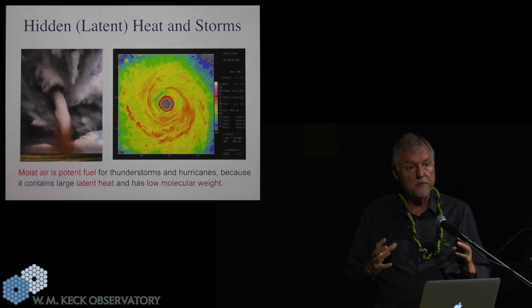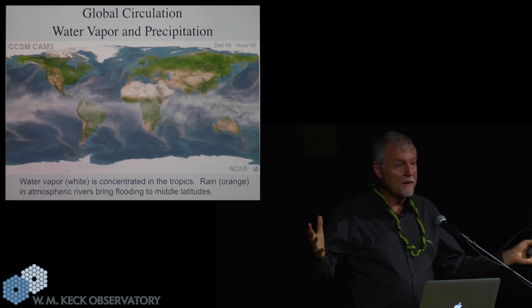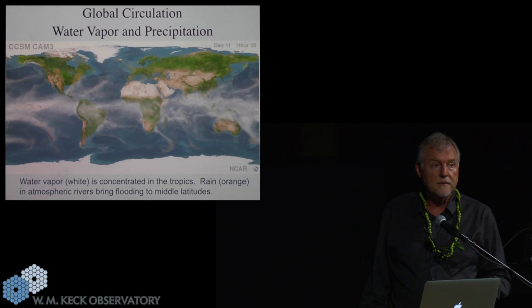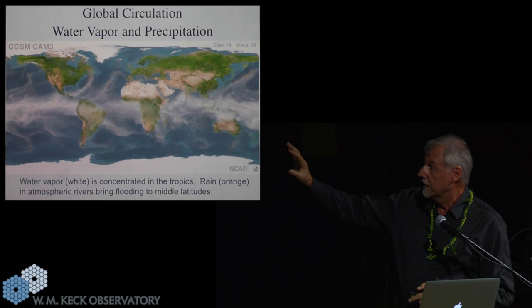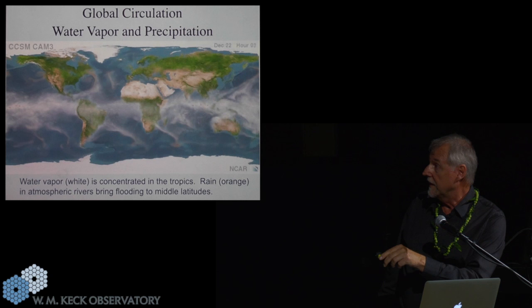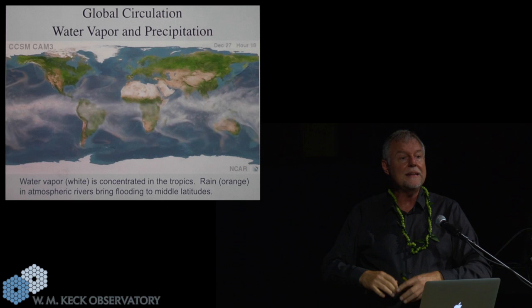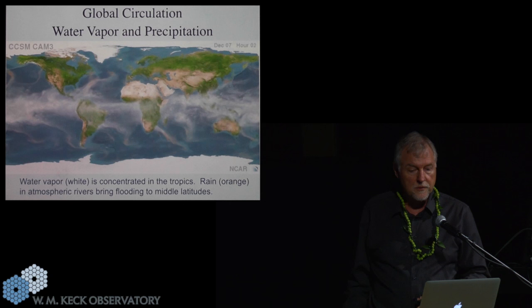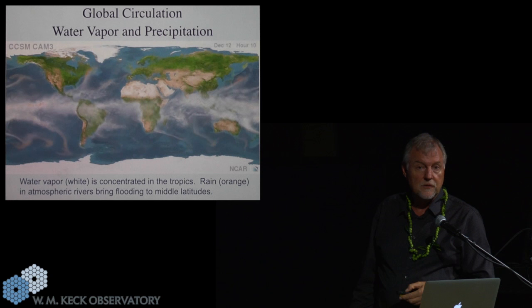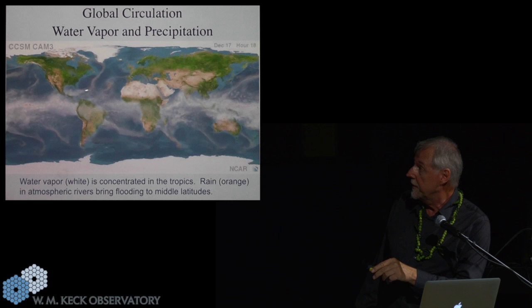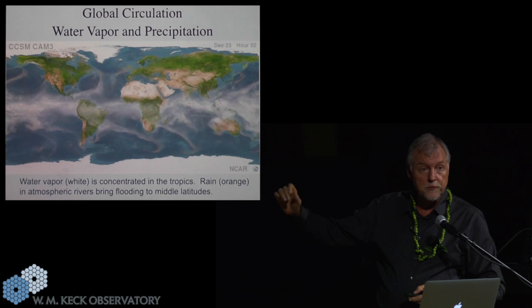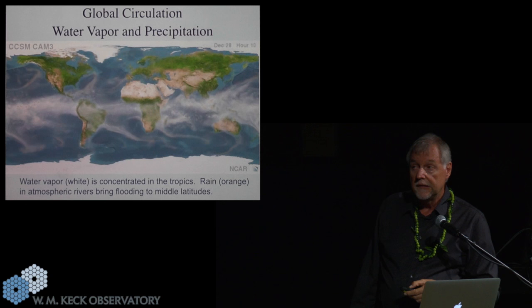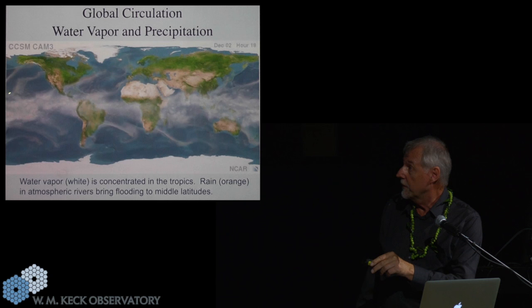This is a global view of the water vapor in the atmosphere and also the precipitation. The water vapor is in white, and the precipitation is in orange. You see that there's a lot of water vapor near the equator because it's easier for water to evaporate when the water is at a higher temperature. The warmest ocean is near the equator because that's where the sun beats down the most. And then the water vapor moves north, and where it turns orange, it's precipitating. Hawaii is over here somewhere. The water vapor comes by Hawaii, and then it streams up into the west coast and produces flooding. They refer to that as the Pineapple Express.